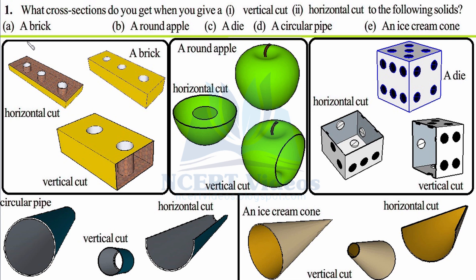Now let's look at a round apple. When you perform a horizontal cut — cutting like this with a knife or with your imagination — you get a circle. So the cross section after cutting an apple horizontally is a circle. When you make a vertical cut, cutting your apple like this, you again get a circular cross section. So in both ways, you get a circular cross section.